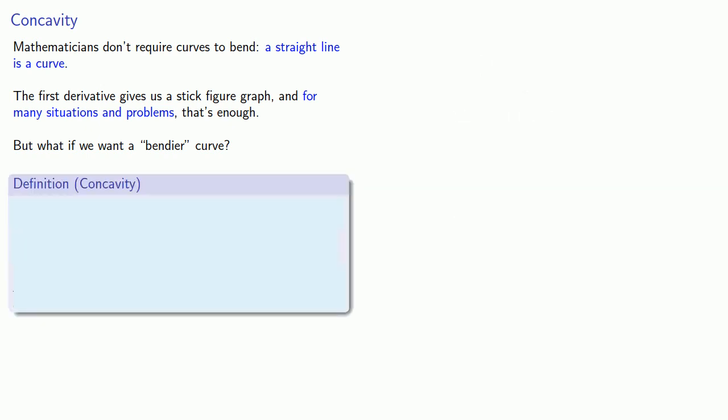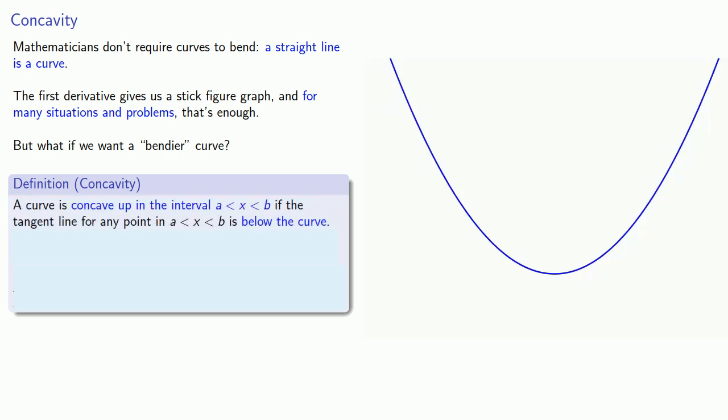Concavity is a geometric concept, and there are several ways of introducing concavity. But because we're talking about tangent lines, let's talk about concavity in the context of these tangent lines. If I have a curve, that curve is concave up in some interval if the tangent line for any point in the interval is going to be below the curve.